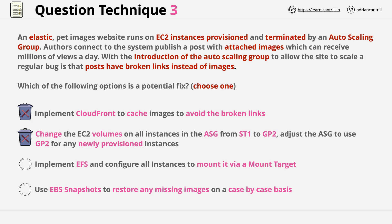The last answer I also want to exclude right away. The problem with it is the last part — the 'case-by-case basis.' The question is structured around using automation — an elastic architecture using auto-scaling groups. Any answer which suggests something manual is likely to be wrong. At best, assume it's wrong and review it later, but I would be almost certain this isn't the correct answer. At this point we're in a pretty good situation because we only have one remaining answer — the third answer.